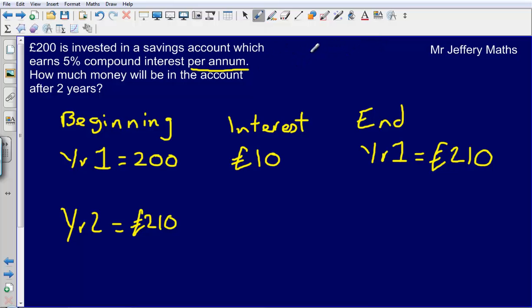So let's work out what my interest will be in the second year. So here I've got £210. Let's work out what 10% is first. 10% will be £21. So 5% will simply be half of that which is £10.50.